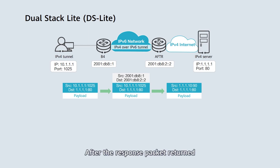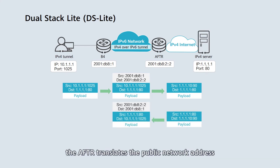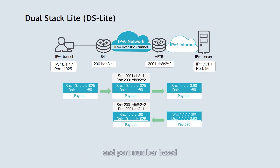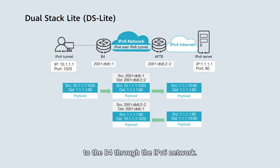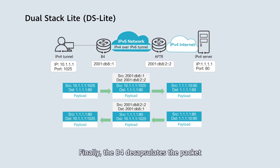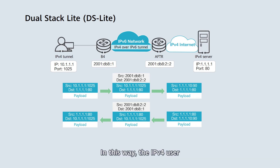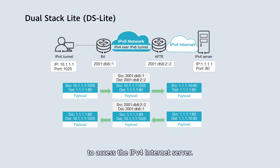After the response packet returned by the IPv4 server reaches the AFTR, the AFTR translates the public network address and port number into the private network address and port number based on the NAT mapping table, and adds the IPv6 packet header. Next, the packet is forwarded to the B4 through the IPv6 network. Finally, the B4 decapsulates the packet and sends it to the IPv4 user. In this way, the IPv4 user can use a private network address to access the IPv4 internet server.